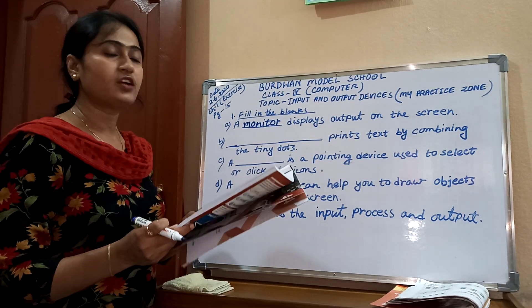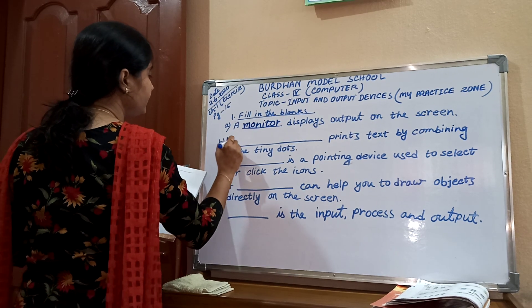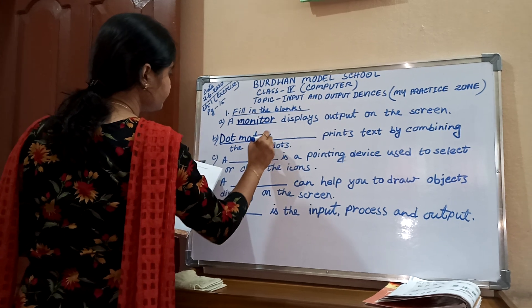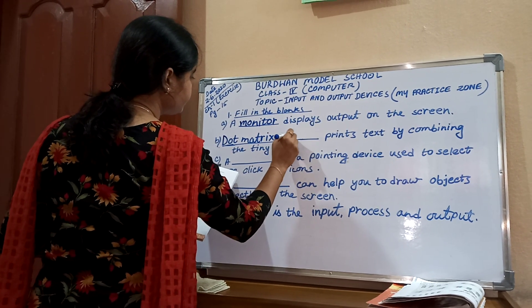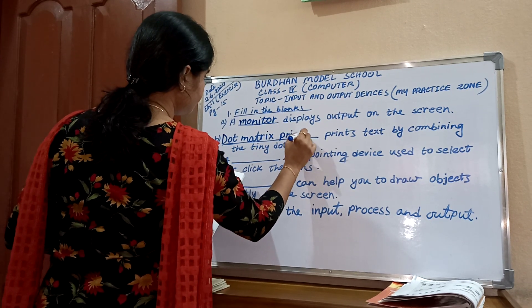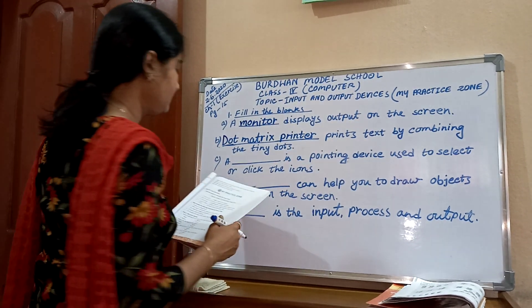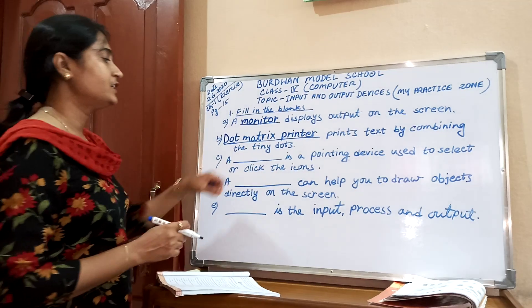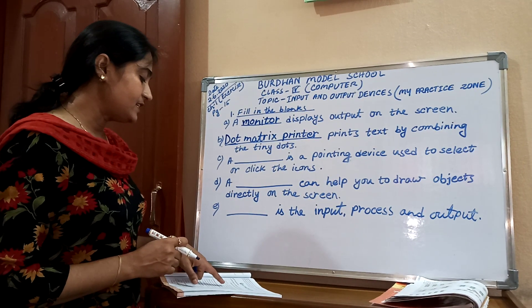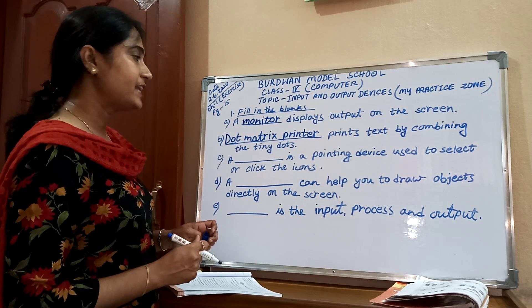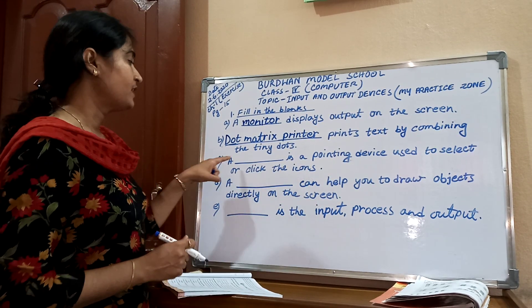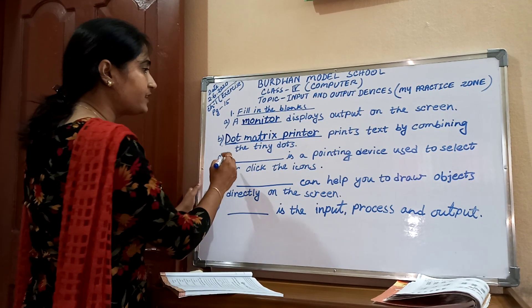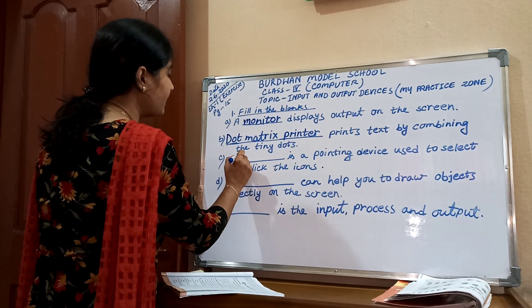Which type of printer prints text by combining the tiny dots? Dot matrix printer. Write down over here — dot matrix printer. Number 1A: A dash is a pointing device used to select or click the icons. Which is the pointing device? Mouse. Mouse is a pointing device used to select or click the icon.